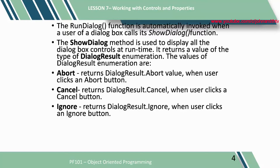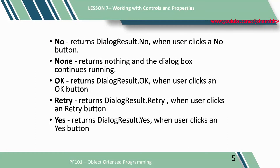The values of dialog result enumeration are: 1. Abort — returns dialog result abort value when the user clicks an abort button. 2. Cancel — returns dialog result cancel when the user clicks a cancel button. 3. Ignore — returns dialog result ignore when the user clicks an ignore button. 4. No — returns dialog result no when the user clicks a no button. 5. None — returns nothing and the dialog box continues running.